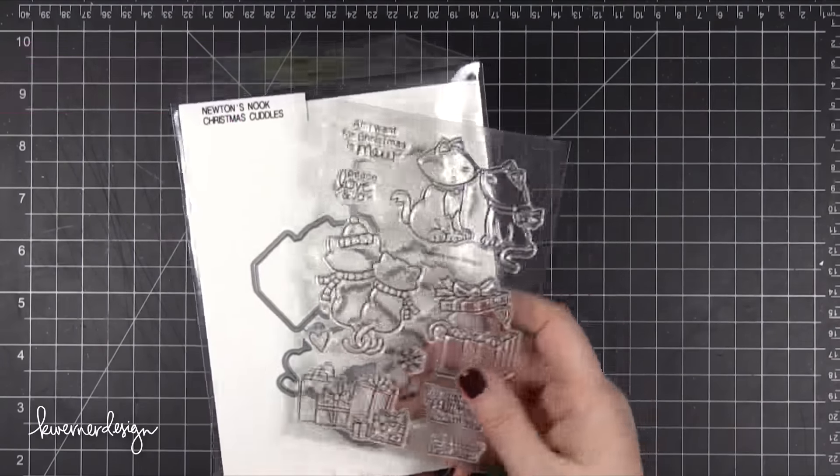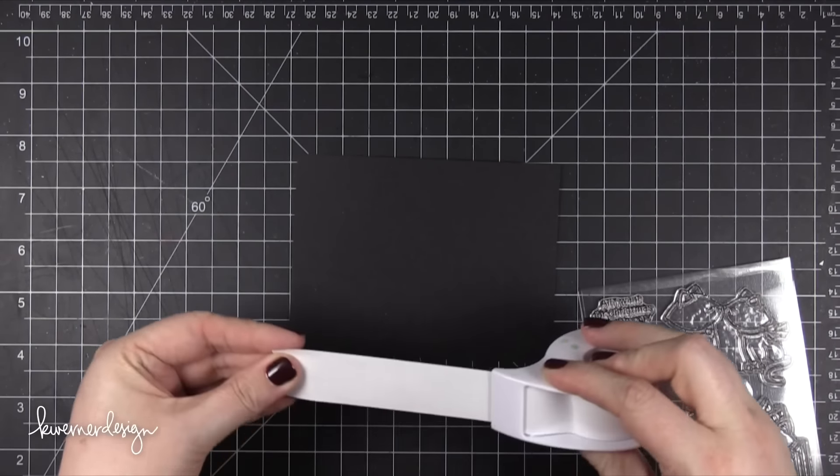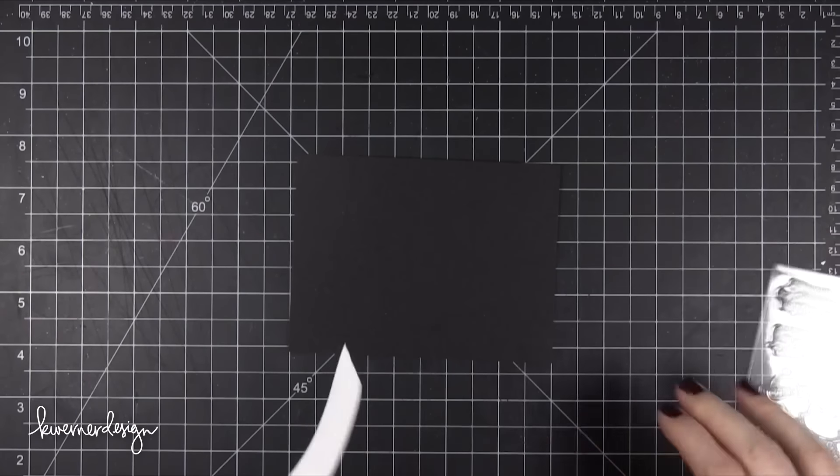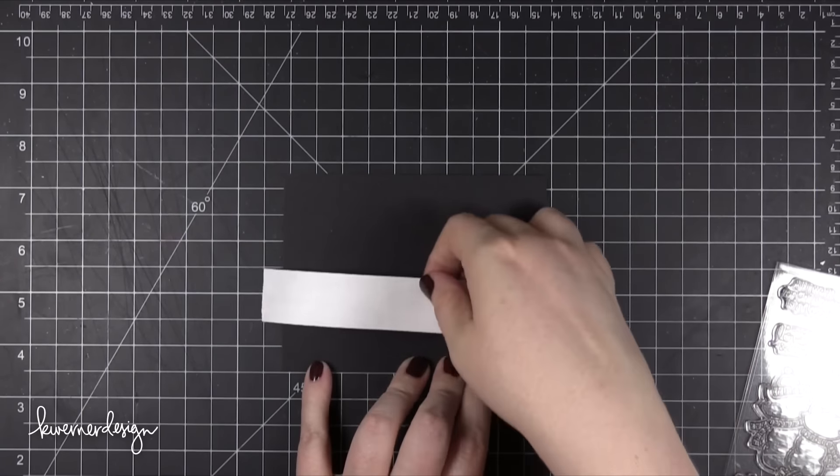Because the images are outline images, you would naturally think that I would just color them in, but instead I'm going to be doing some embossing on black card stock and then just coloring in small areas. You'll see what I mean here in a minute.